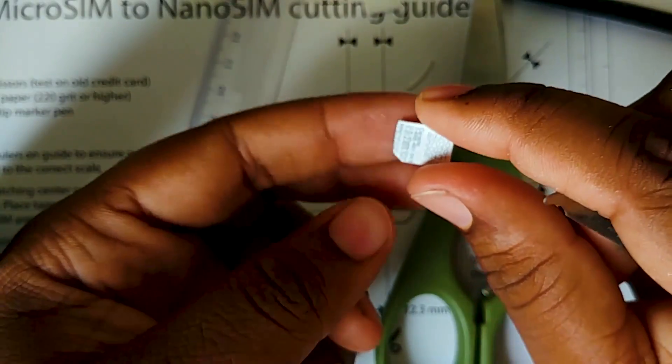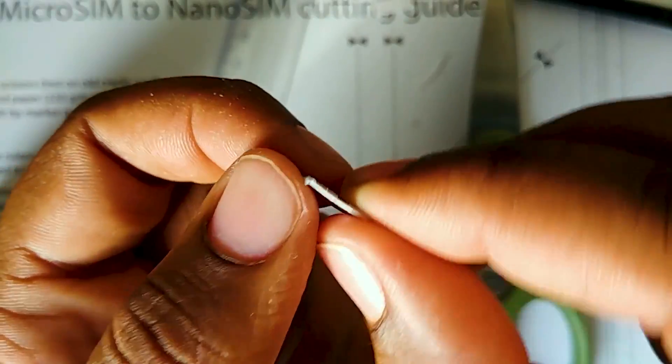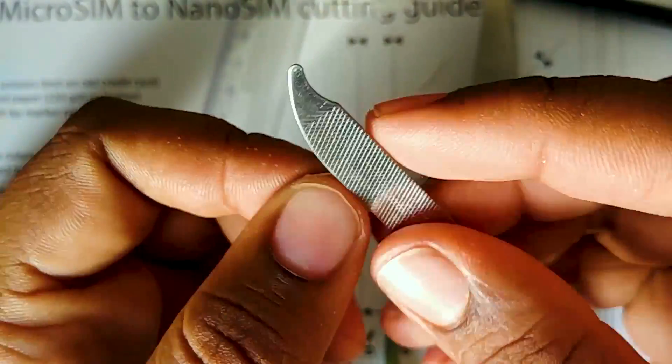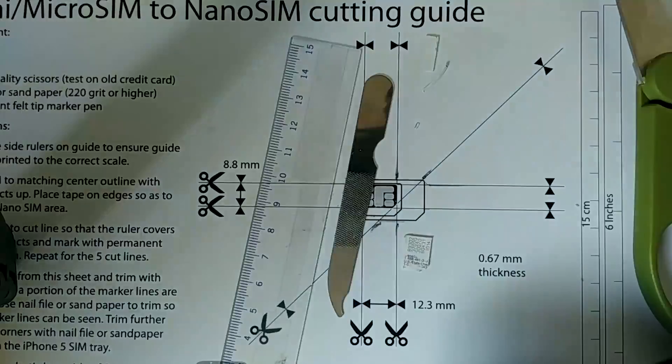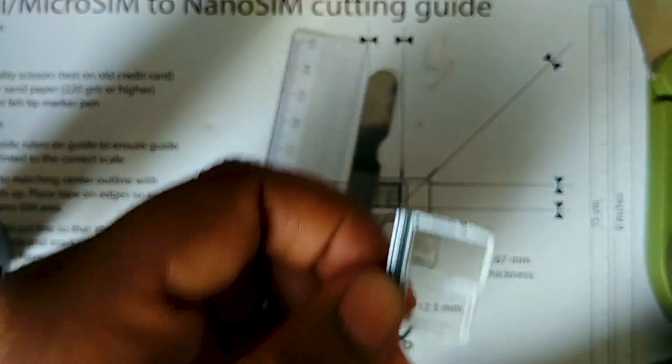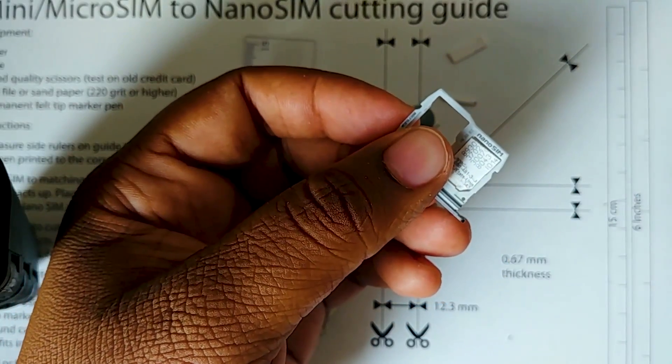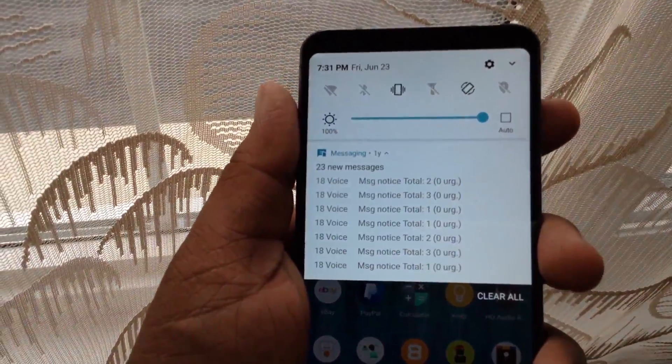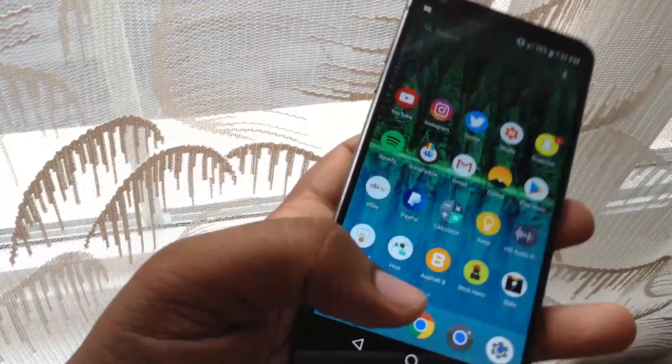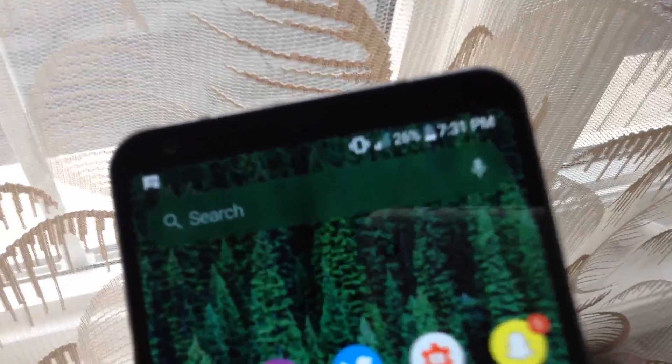Alright, so I've filed off the edges. Now you gotta file it thin. Here's the G6 SIM tray and we're gonna see if it fits. So it fits. I'm gonna put it into the G6 and see how it works. I have messages and at the top I have the bars saying I have signal.